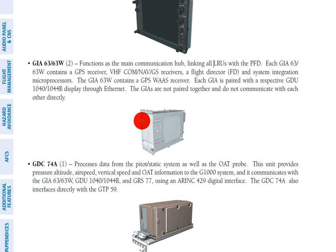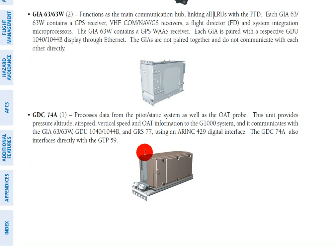The next thing we need is air data, and that's what the GDC 74 Alpha gives you. It processes data from the pitot-static system as well as outside air temperature, and we use it for things like pressure altitude, airspeed, vertical speed, and outside air temperature. All of that is processed in this unit, and it sends the data through an ARINC-429 digital interface — a set standard for how data is formatted when sent from one device to another.